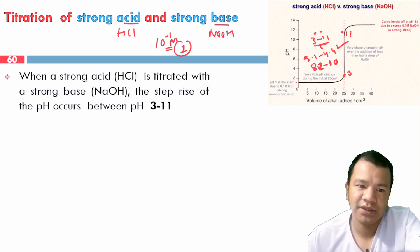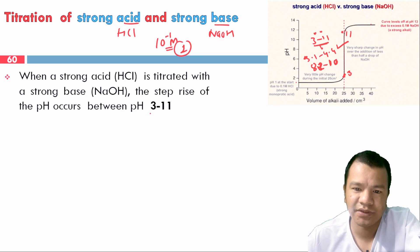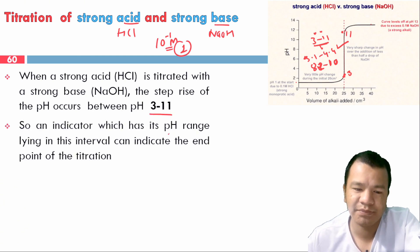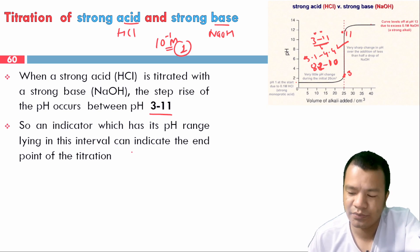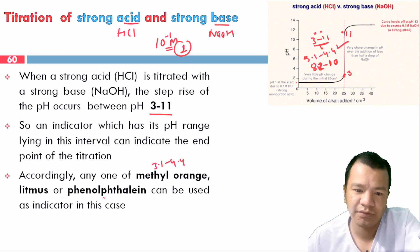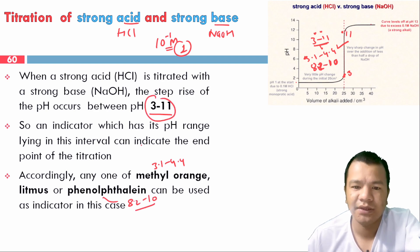For strong acid versus strong base titration, the steep rise is from pH 3 to 11. Any indicator with a pH range falling within this interval can indicate the endpoint. Methyl orange (3.1–4.4) and phenolphthalein (8.2–10) can both be used as suitable indicators.